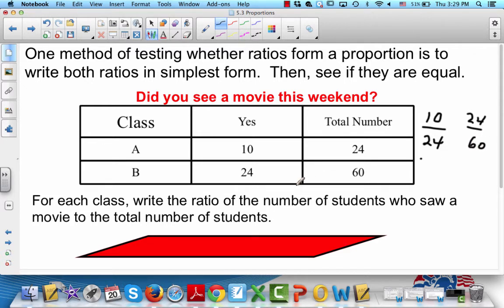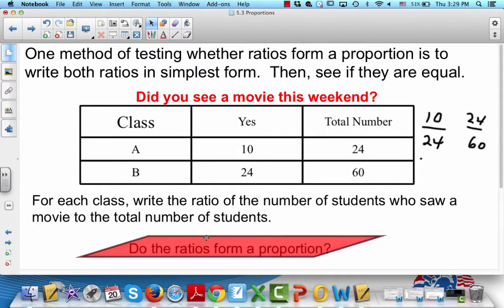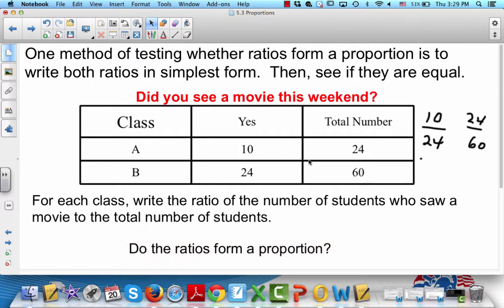So how do we find out if this is a proportion? Do the ratios form a proportion? Let's look at this and reduce this one. Both of these are divisible by what? Yes, both are divisible by 2. So let's divide both by 2. 10 divided by 2 is 5, and 24 divided by 2 is 12.